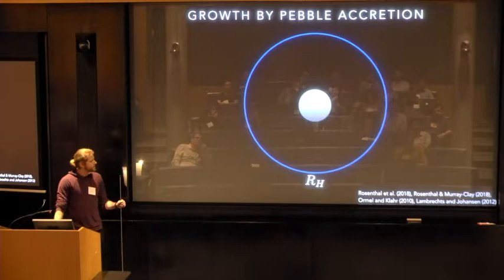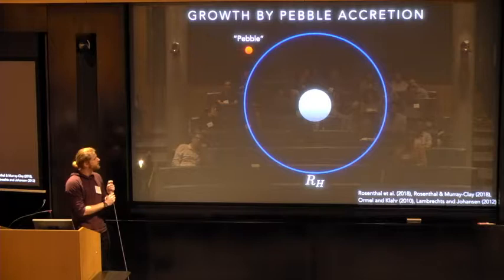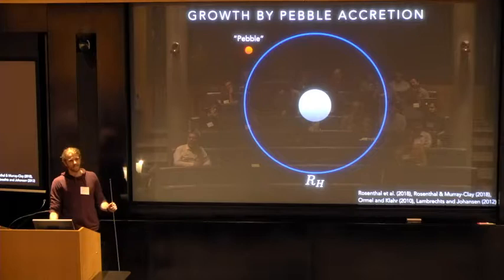So pebble accretion, for those of you who are not familiar with it, is a process of growing planets that focuses on accretion of pebble-sized bodies as opposed to larger planetesimals. The reason we're interested in pebbles is because they have properties such that they're marginally coupled to the gas flow. They're both large enough that they don't just follow the gas, and they're not so big that they don't care about the gas flow at all.